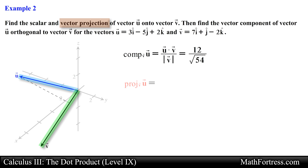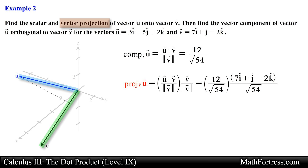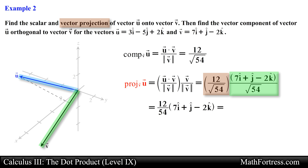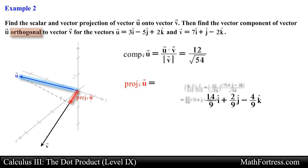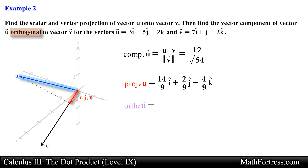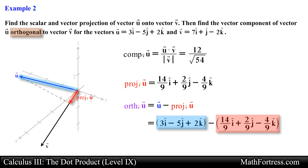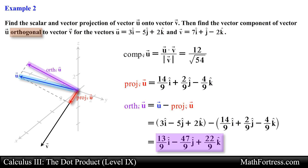For the vector projection of vector u onto vector v, we take the value we found for the scalar projection and multiply it by the unit vector in the direction of vector v. Substituting the expressions and simplifying, we obtain the following vector. Lastly, let's use this vector to find the orthogonal projection. We take vector u and subtract the vector projection that we just found. Doing that, we obtain the final vector.